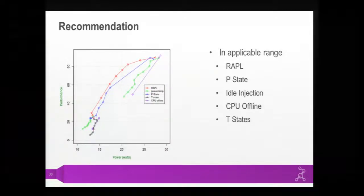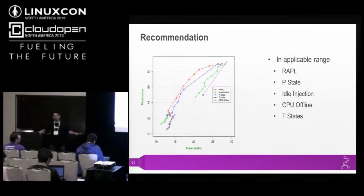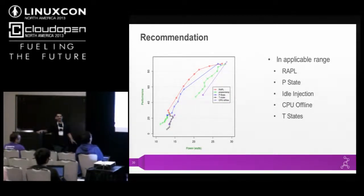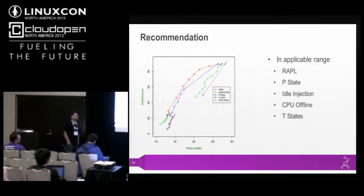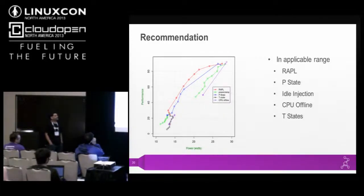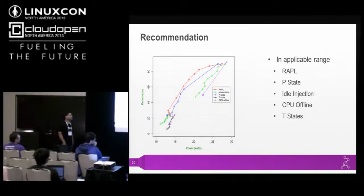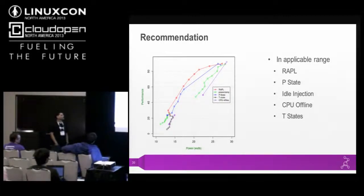Based on all these measurements, my recommendation — noting this is not independently verified by Intel QA and is not an official Intel recommendation — in the applicable range, consider using methods in this order: RAPL, P state, idle injection, CPU offline, and T state. In the low power areas, use idle injection instead of CPU offline and T states. If you have RAPL, P state, and idle injection, you can pretty much cover the entire range.